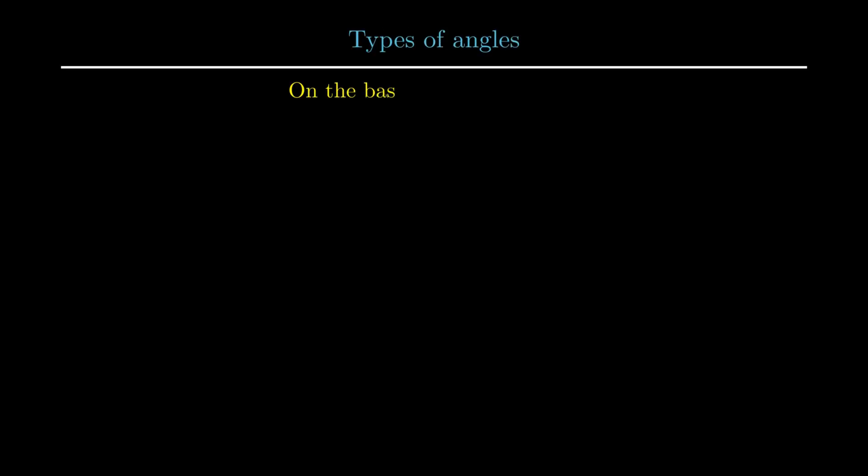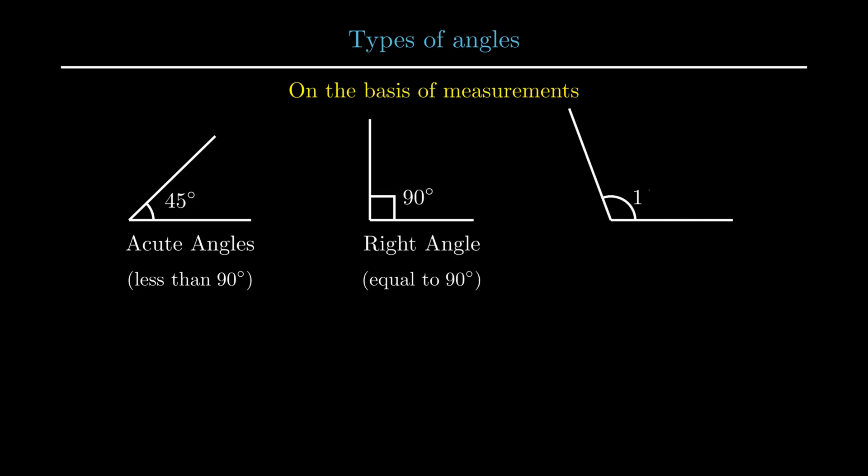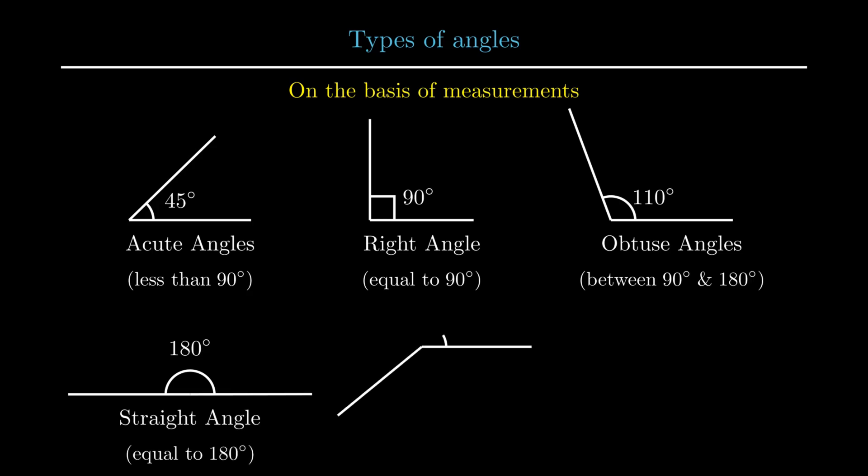After understanding the angle, let us understand the classification of angle on the basis of measurement. Angles that measure less than 90 degrees are known as acute angles. Angles that measure exactly 90 degrees are called right angles. Angles that measure greater than 90 degrees but less than 180 degrees are known as obtuse angles. Angles whose measurement is 180 degrees is known as straight angle. Angles that measure greater than 180 degrees but less than 360 degrees is known as reflex angle. And angles that measure 360 degrees is known as complete angle.